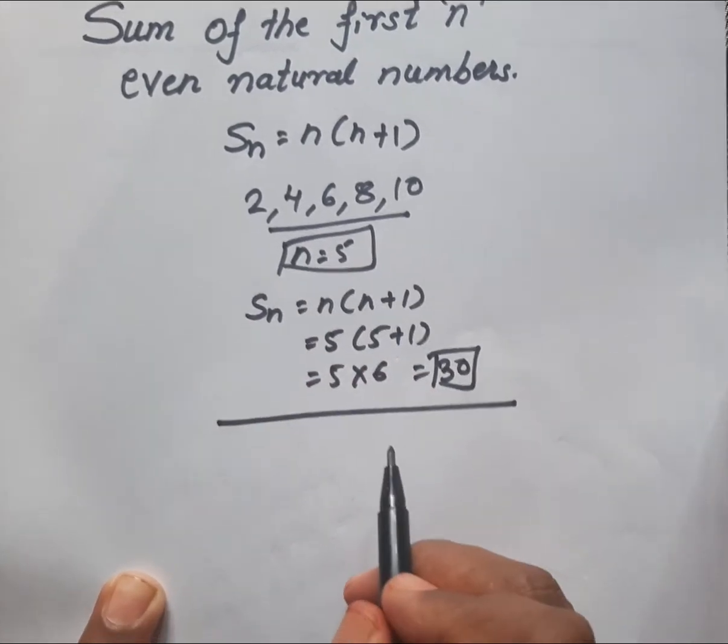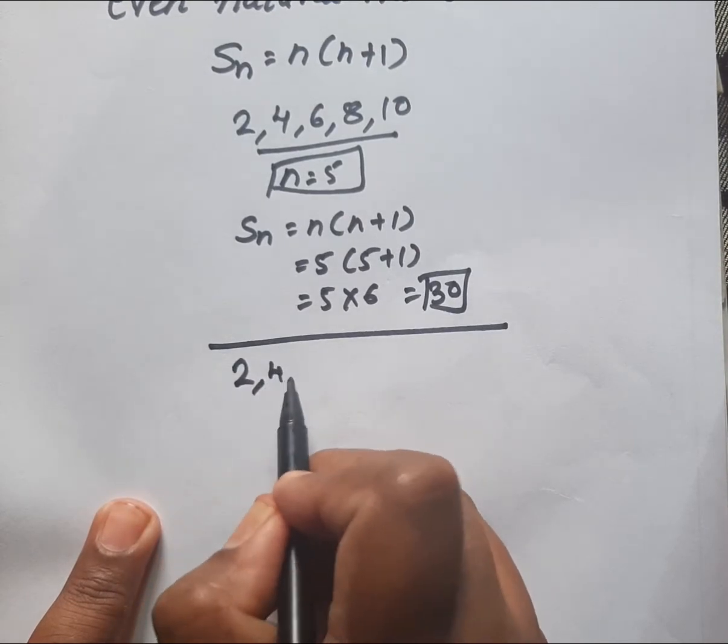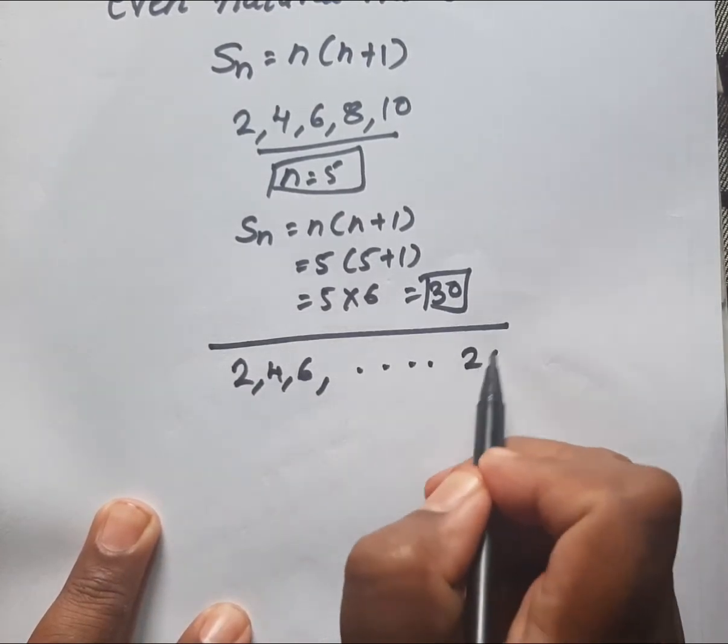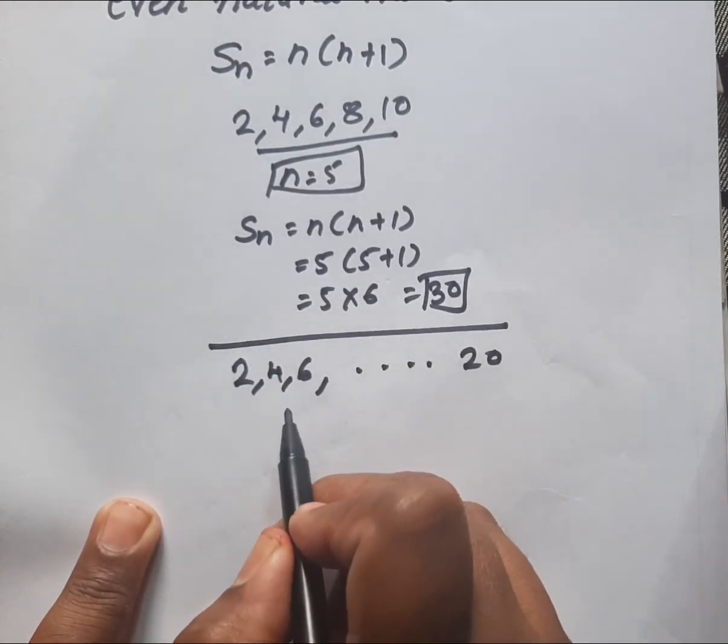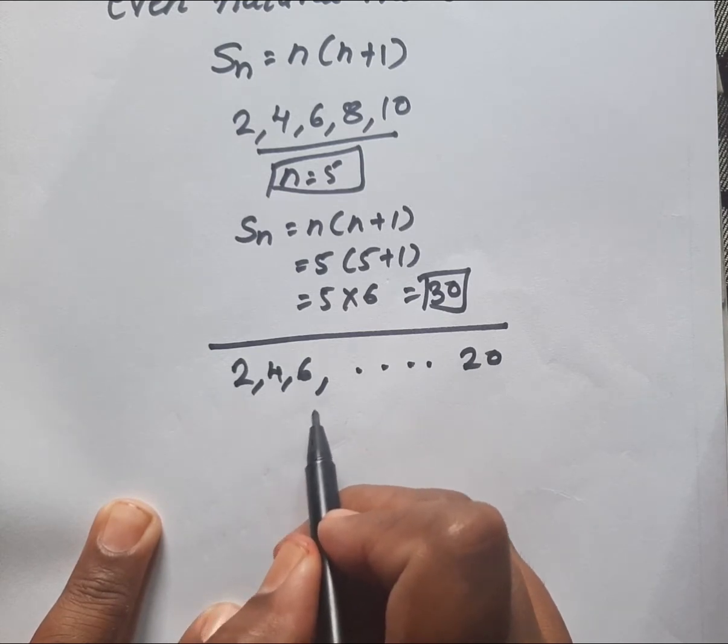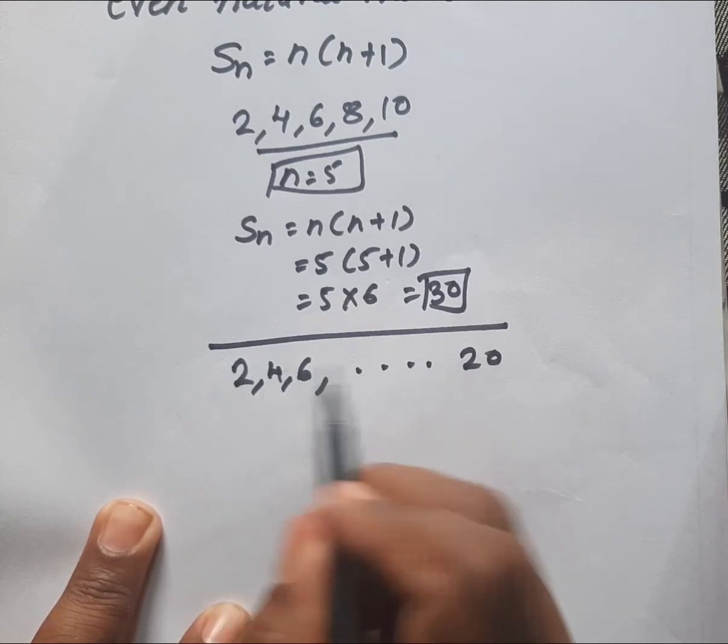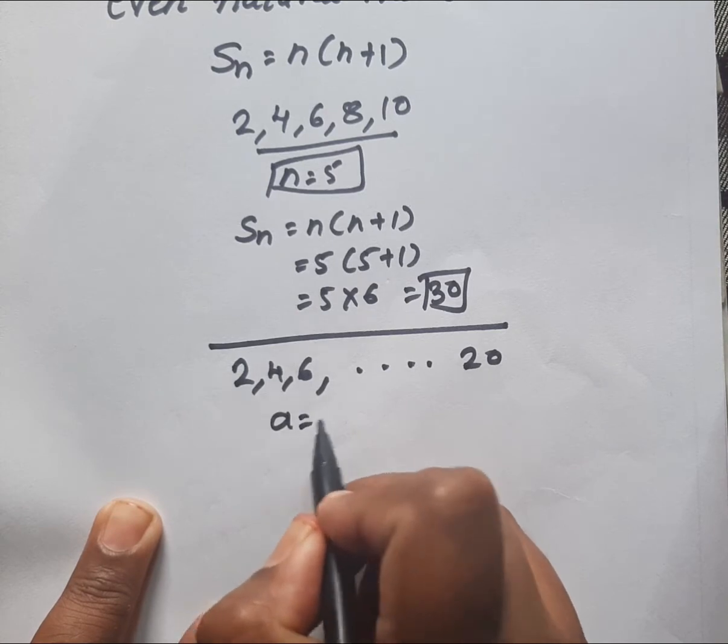Next example: 2 comma 4 comma 6 dash dash dash 20. Here we have to find out how many n natural numbers are there from 2 to 20. Here a equals 2, d equals 2, and tn equals 20.